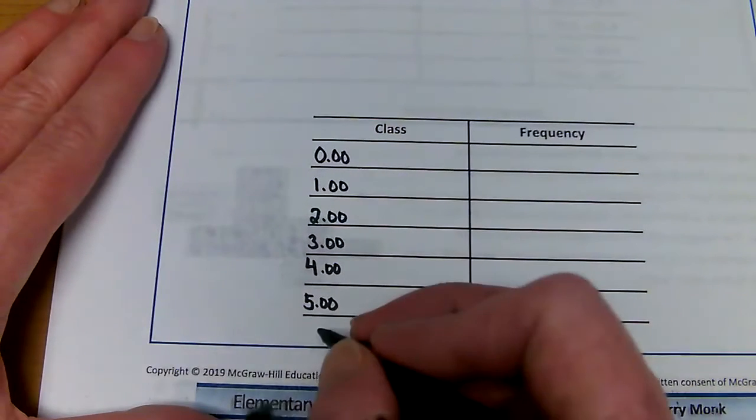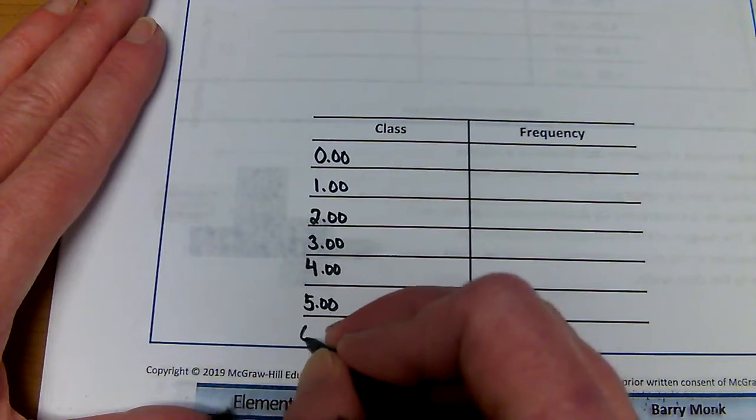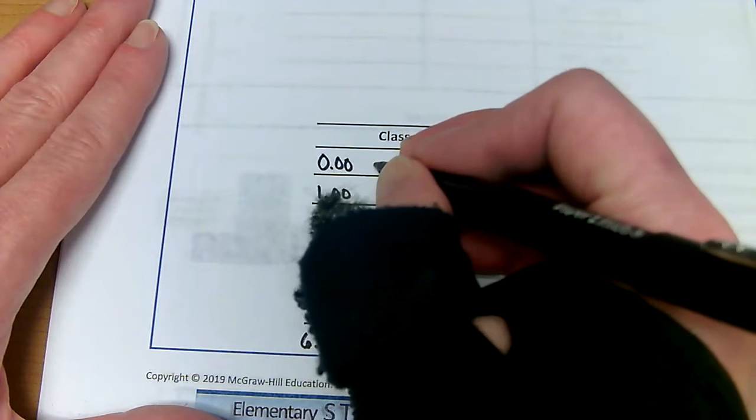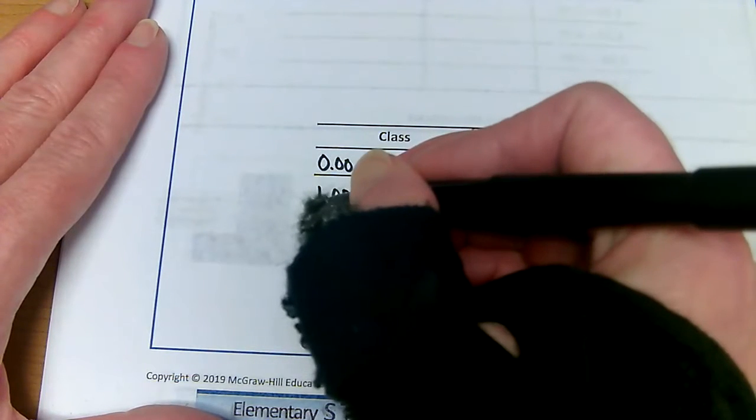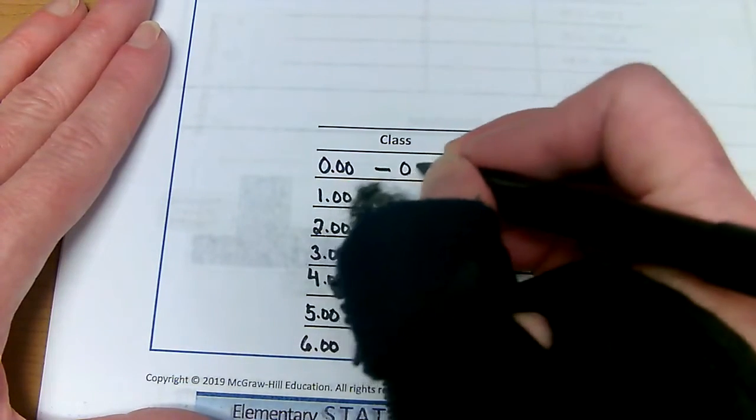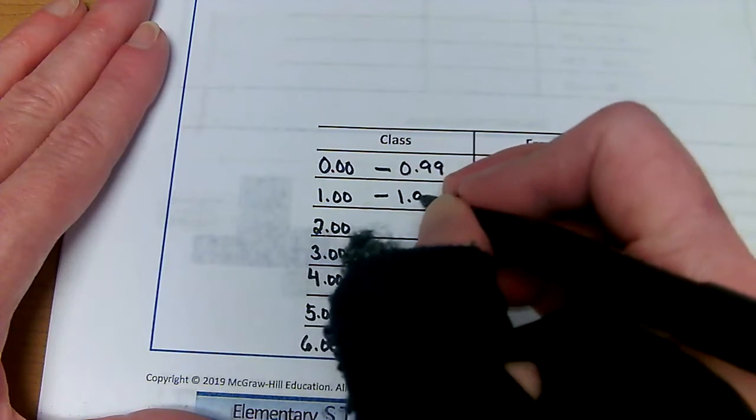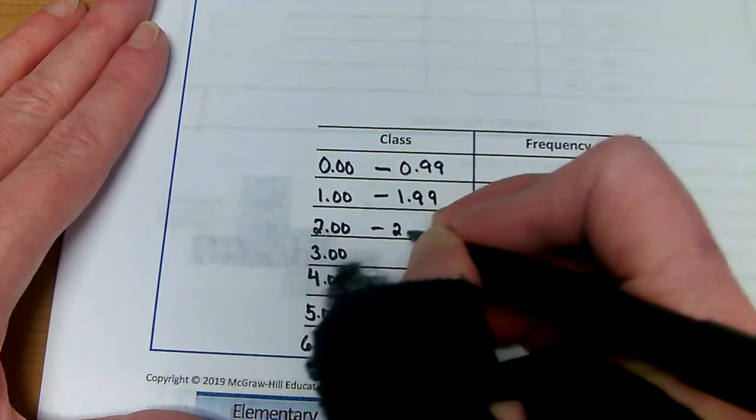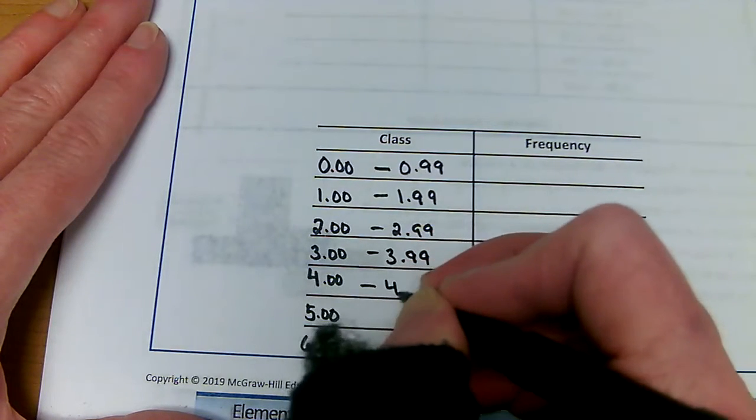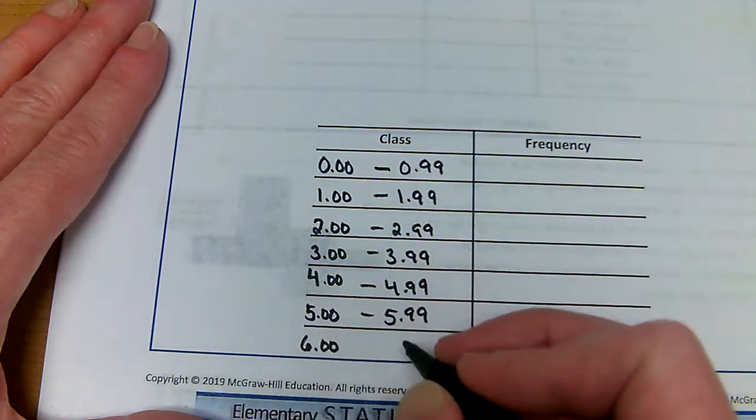I noticed a value at 6.55, so I need to go all the way up to 6.00. Now let's think about where this class would end. It needs to end right before 1.00, so this would be at 0.99, then this would be ending at 1.99, 2.99, 3.99, 4.99, 5.99, and 6.99.